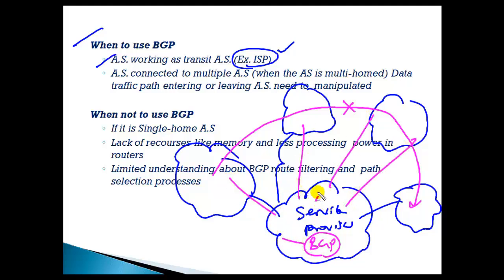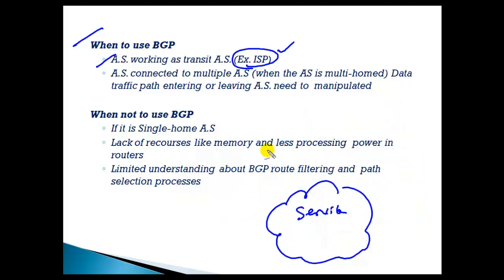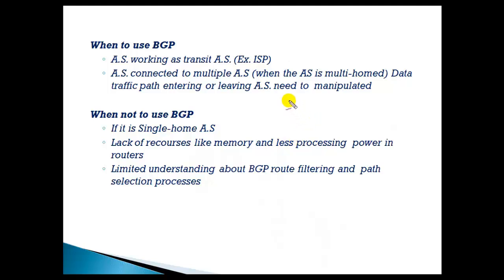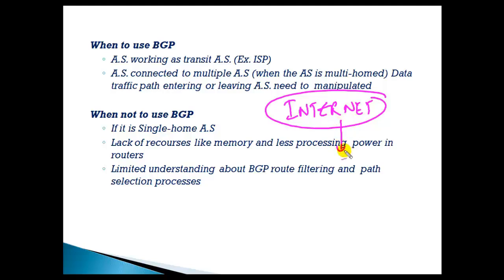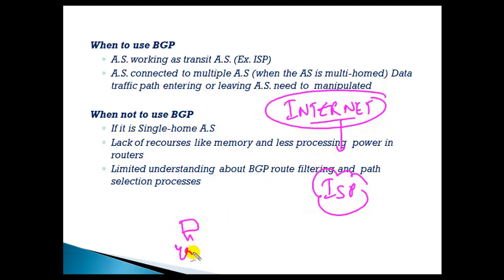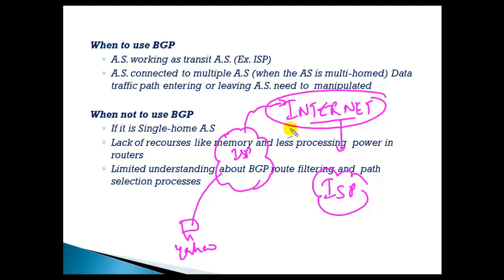BGP is the only protocol designed to exchange routes between multiple autonomous systems and it can do path manipulations — it is specially designed for that. The entire internet, the biggest network in the world, runs BGP. The internet is maintained by service providers who connect to each other. If you want to access the internet, let's say you go to yahoo.com — your request reaches your ISP and from there it goes to the internet, which is a public network where everyone is connected.